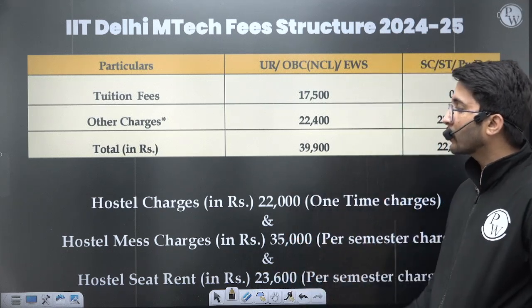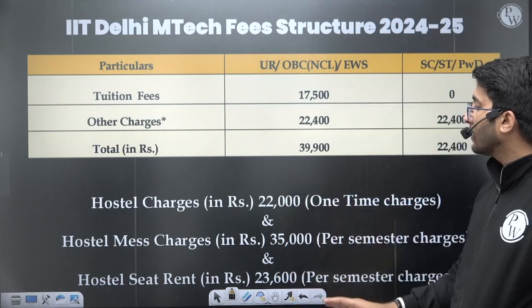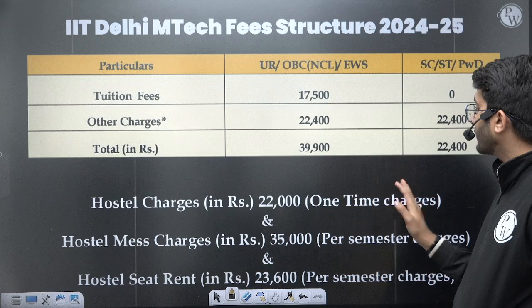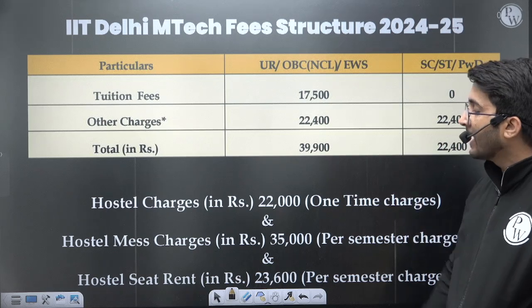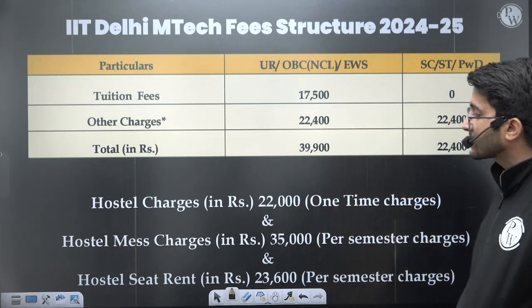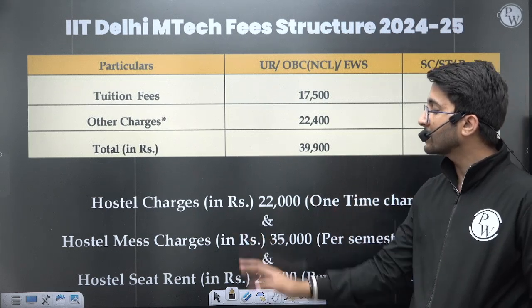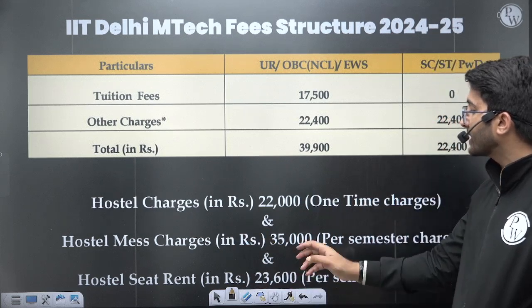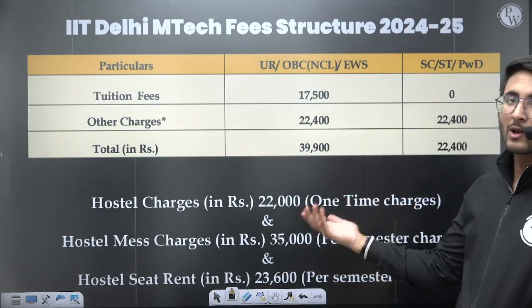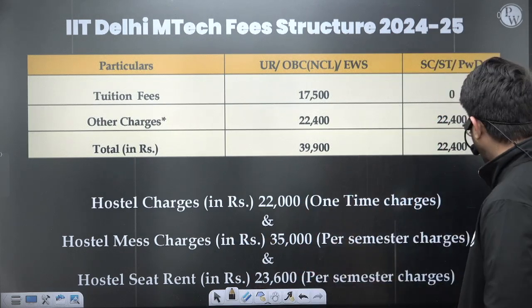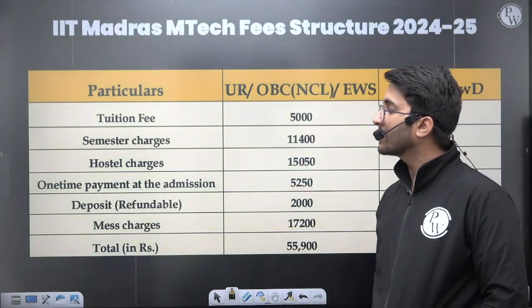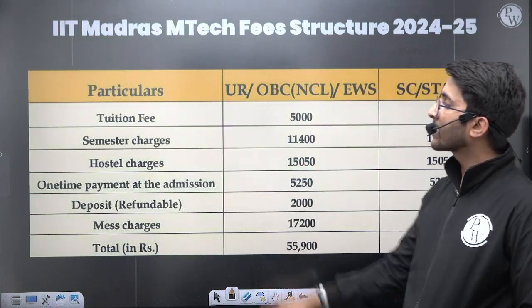If you are able to get a hostel at IIT Delhi, the hostel one-time charges are ₹22,000, the hostel mess charges are ₹35,000 per semester, and the hostel seat rent is ₹23,600 per semester. These charges vary hostel by hostel and will change accordingly.